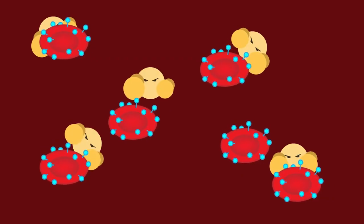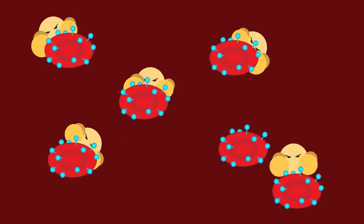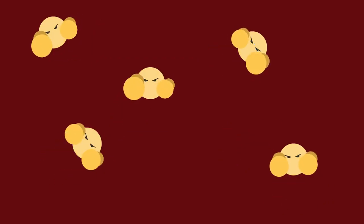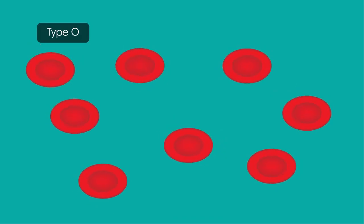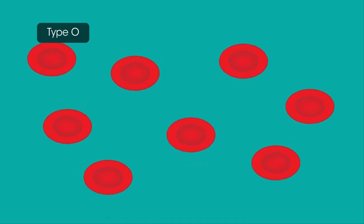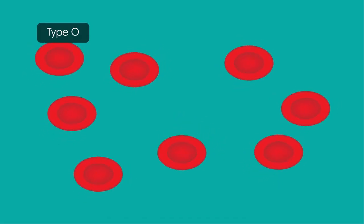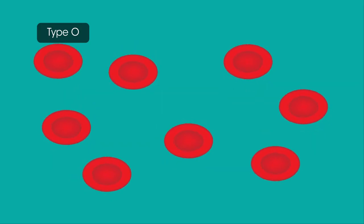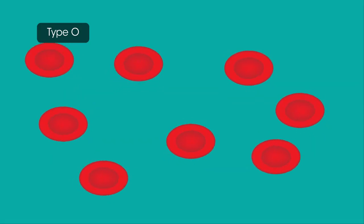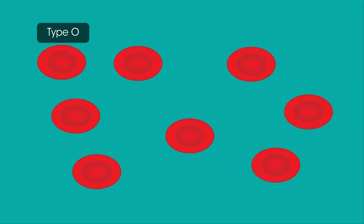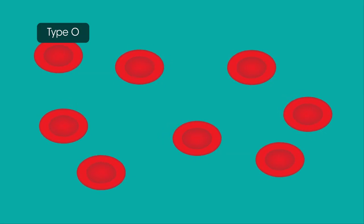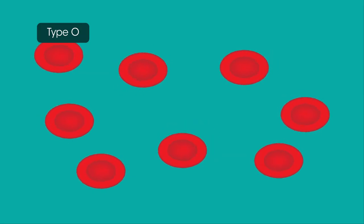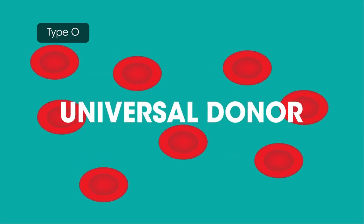Antigens trigger an immune response in which your body tries to get rid of them, as it thinks they're foreign and bad. Because blood type O doesn't have any antigens on its surface, when type O is donated to people from other blood groups, the recipient's body doesn't recognize them as foreign and so doesn't try to fight them off. That's why no-antigen O is the universal donor.